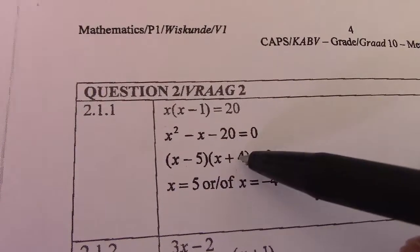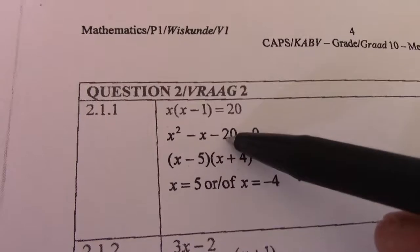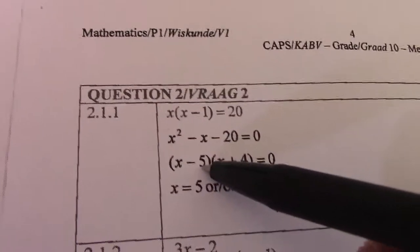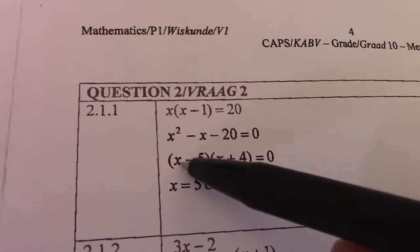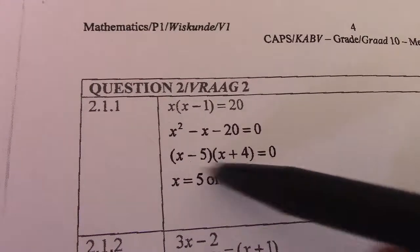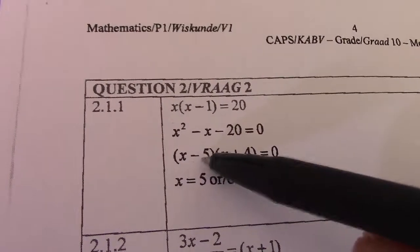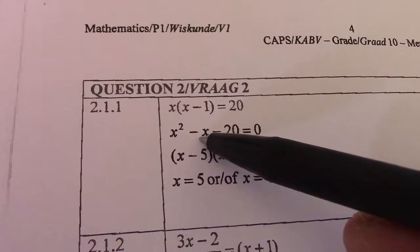So as you can see, minus 5 times positive 4 gives me negative 20. But minus 5x plus 4x—multiply the two furthest terms—minus 5x plus 4x gives me 1x.